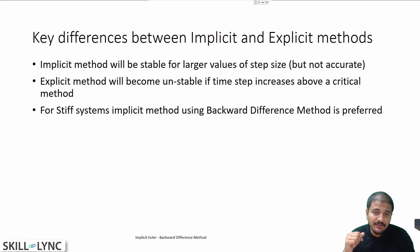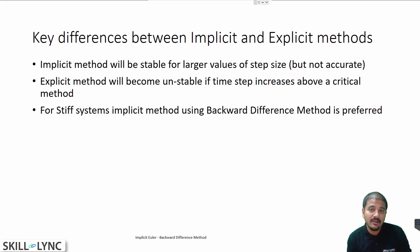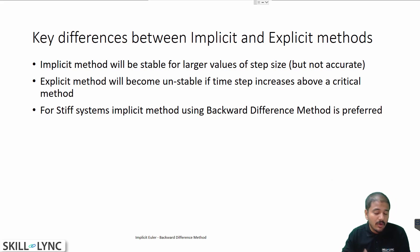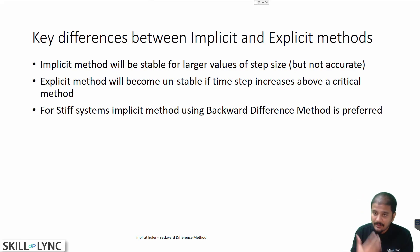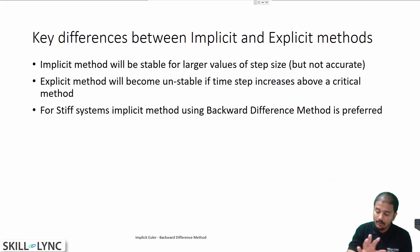As far as the key differences are concerned between the implicit and explicit methods: the implicit method gives you the advantage of being more stable, whereas the explicit method is much easier to code and maybe a bit faster as well. For stiff systems, which is typically what happens in reacting flow cases or whenever there is chemistry involved, you most likely use an implicit method, which can also be called the backward difference method.